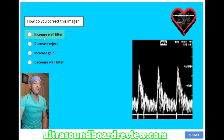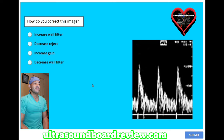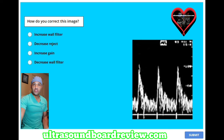How do you correct this image? A, increase wall filter. B, decrease reject. C, increase gain. Or D, decrease wall filter. This image shows three little wall thump artifacts, which means your wall filter is turned down too low. So what you want to do is increase your wall filter to eliminate it.